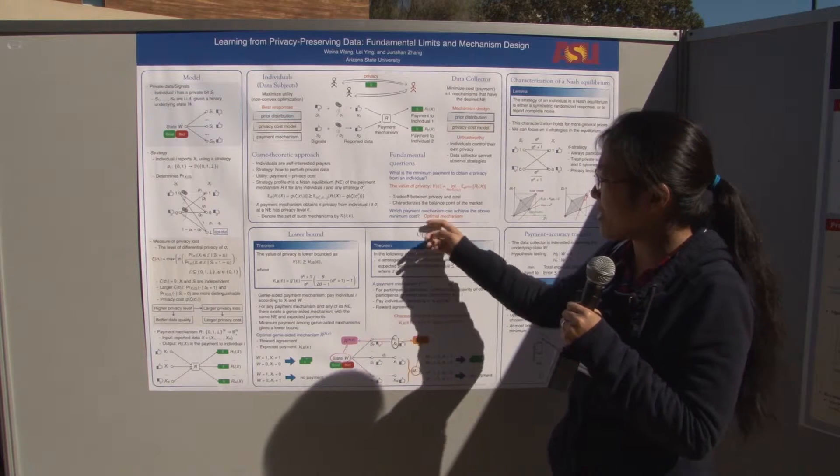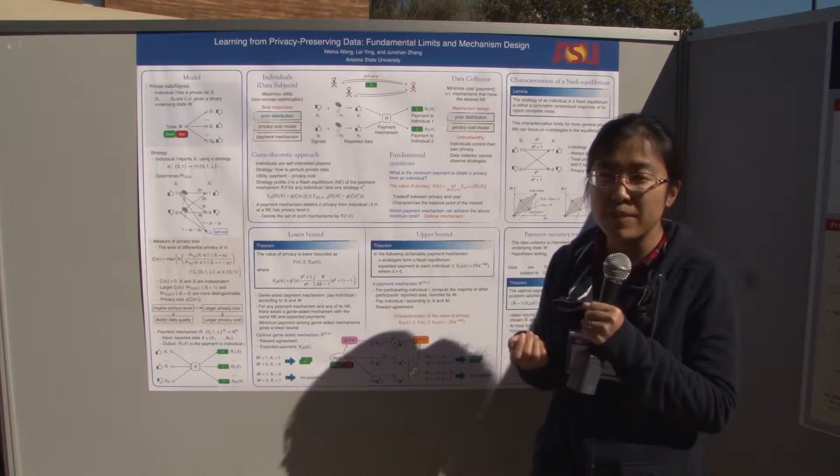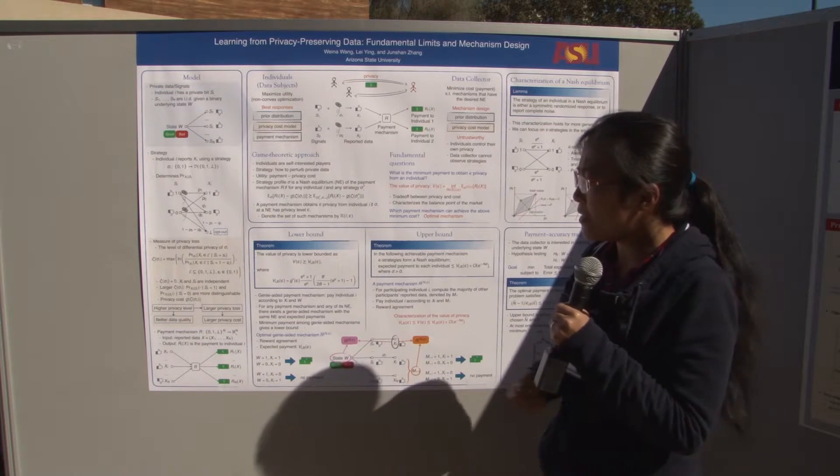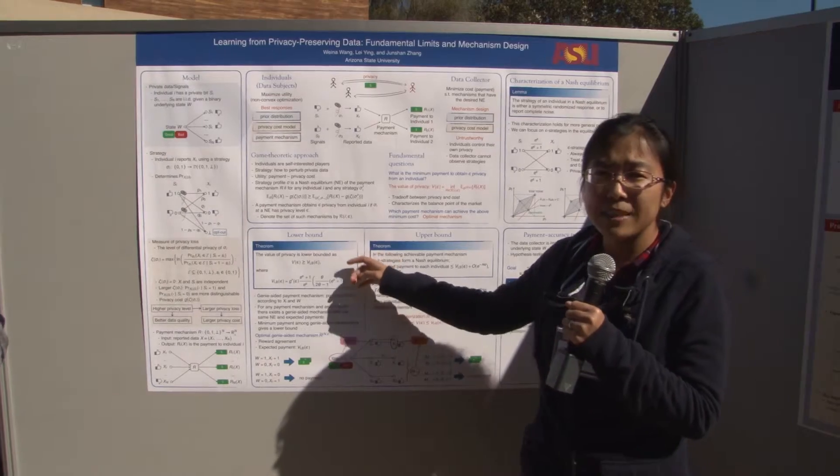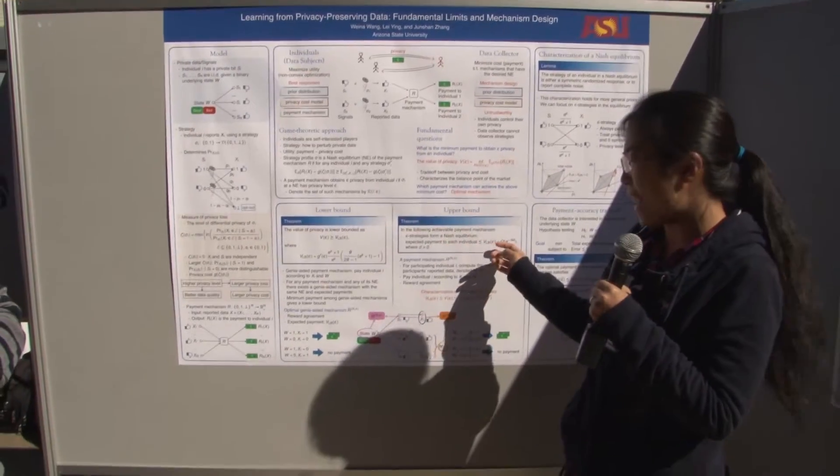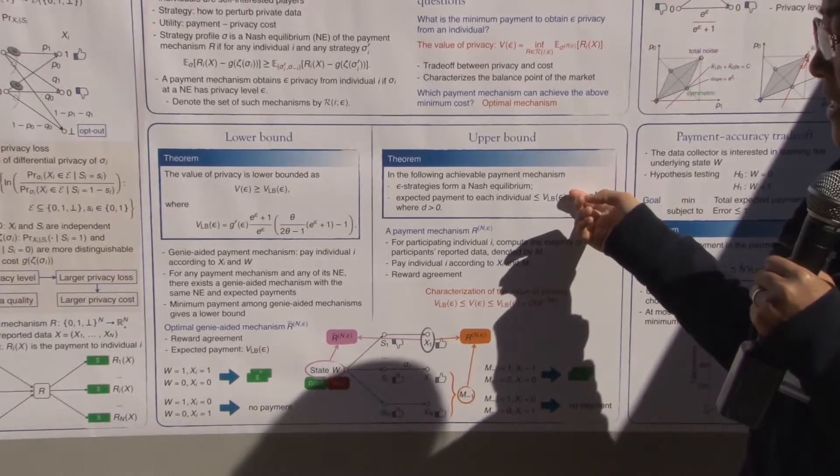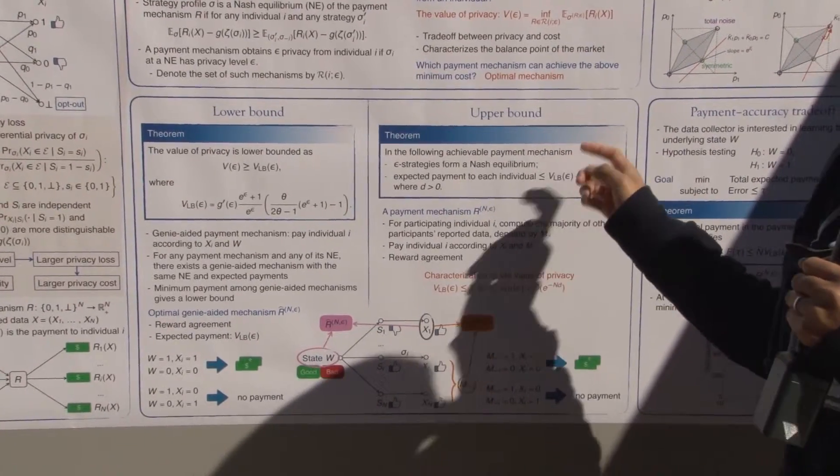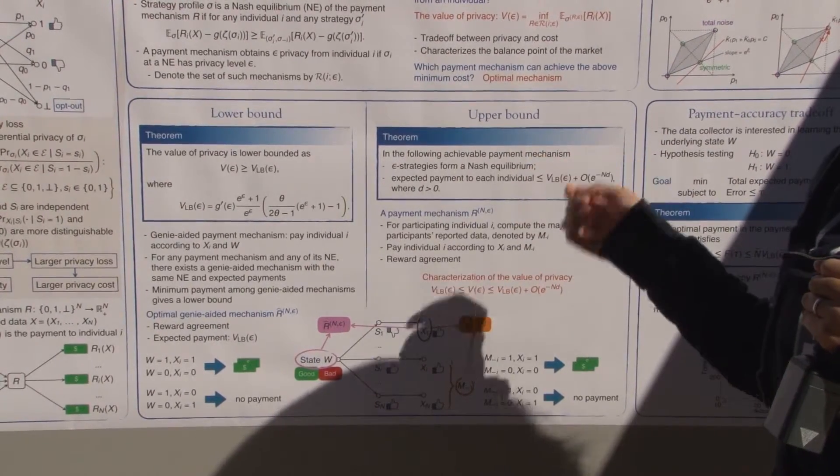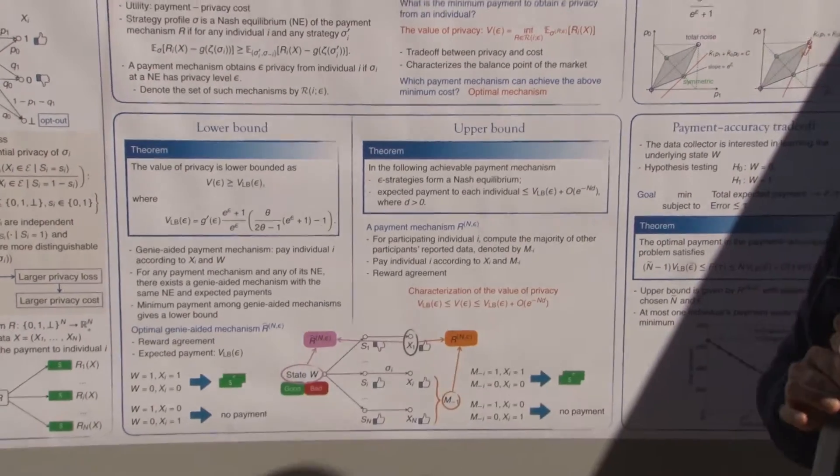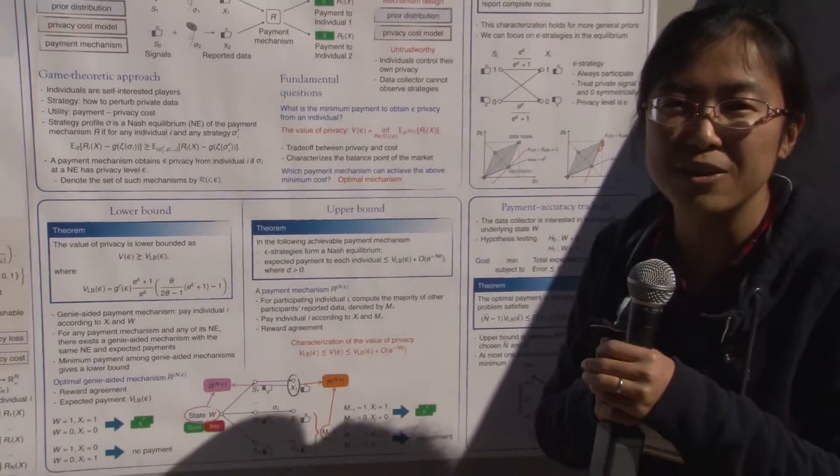The next question is how to achieve this minimum payment, so we need to find the optimal payment mechanism. We give asymptotically tight lower and upper bounds on the value of privacy. The upper bound is given by an achievable mechanism we designed, so it's an asymptotically optimal mechanism. That's basically the main results.